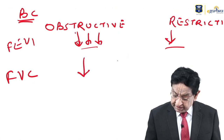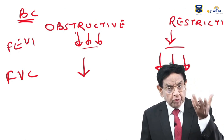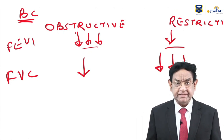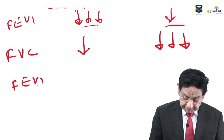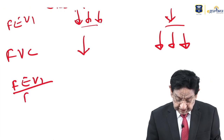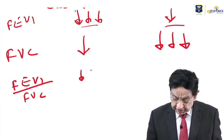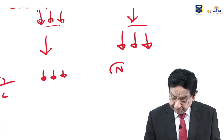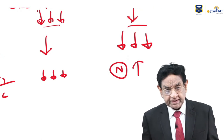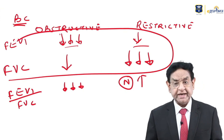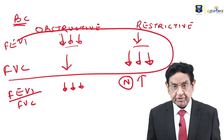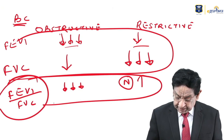FVC (forced vital capacity) is reduced in both diseases. Since both values are reduced in both conditions, you cannot differentiate by a single value. We use the FEV1/FVC ratio — this ratio is highly reduced in obstructive airway disease and is normal or even increased in restrictive airway disease. You go by ratio, not single value.